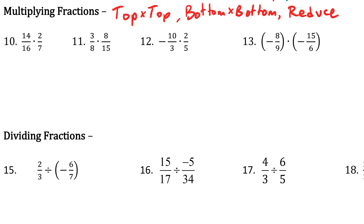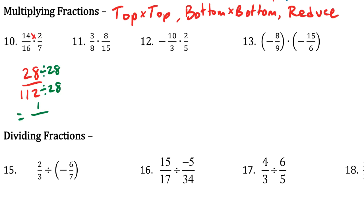For number 10, we're going to do it in order. So it's just top times top, which means 14 times 2, which gets us 28. Over bottom times bottom — 16 times 7, which is 112. Now we reduce. 28 actually goes into 112, so we can divide both by 28. 28 divided by 28 is 1, and 112 divided by 28 is 4. So 1 fourth is our final answer.